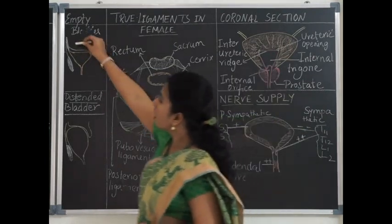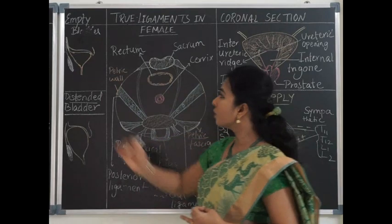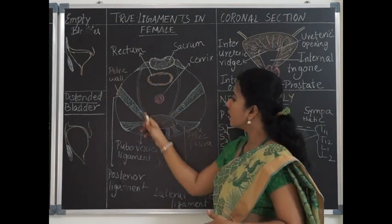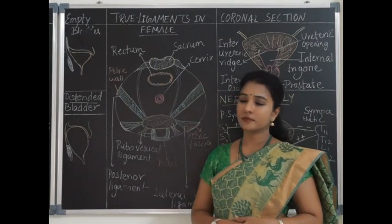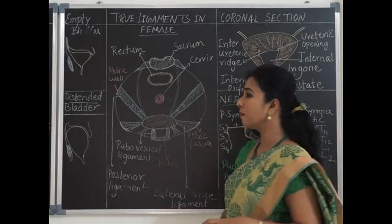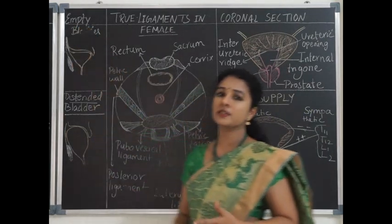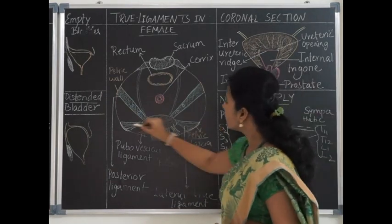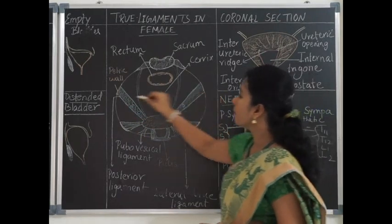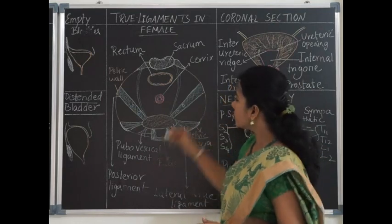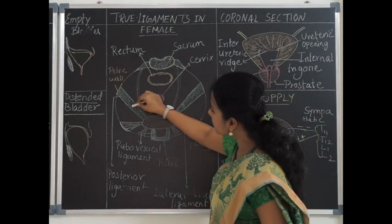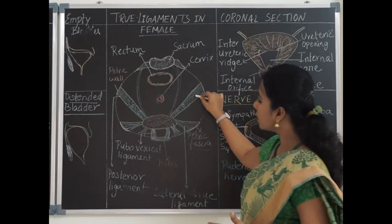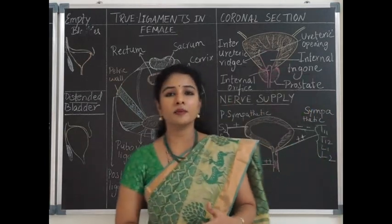In total, there are seven false ligaments and nine true ligaments. The seven false ligaments are: one median umbilical fold, two medial umbilical folds, two lateral umbilical folds, and two sacrogenital folds. The nine true ligaments are: one median umbilical ligament (urachus), two pairs of puboprostatic ligaments (four total), a pair of lateral true ligaments, and a pair of posterior true ligaments. The posterior true ligaments enclose the vesical venous plexus.